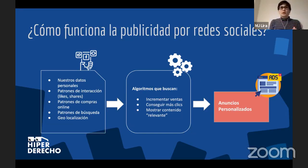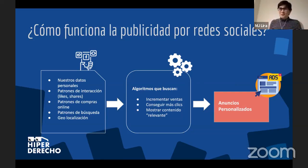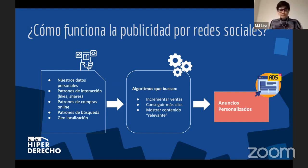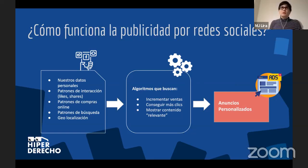El algoritmo suma no solo nuestros likes, sino también el tiempo que pasamos, las cosas que dejamos de seguir, y eso genera anuncios personalizados. Esto está bien en el mundo del marketing: es innovador, moderno, una práctica apreciada. Pero ¿qué pasa cuando estos mismos mecanismos se empiezan a usar en publicidad que no es tan inofensiva como una leche de almendras o una comida para gatos?